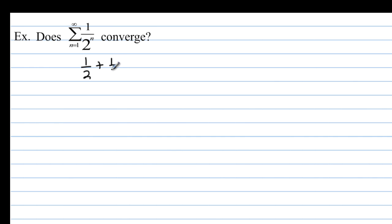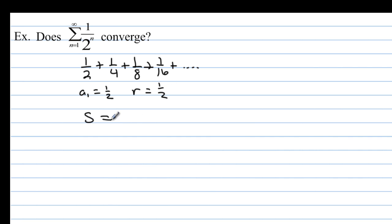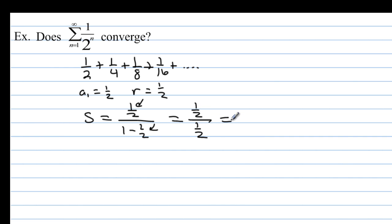Does the series we've been working with converge? We already know it does. With a sub 1 equal to 1/2 and r equal to 1/2, the series converges to (1/2) / (1 − 1/2), which is (1/2) / (1/2), giving us 1 — the same answer we got before.